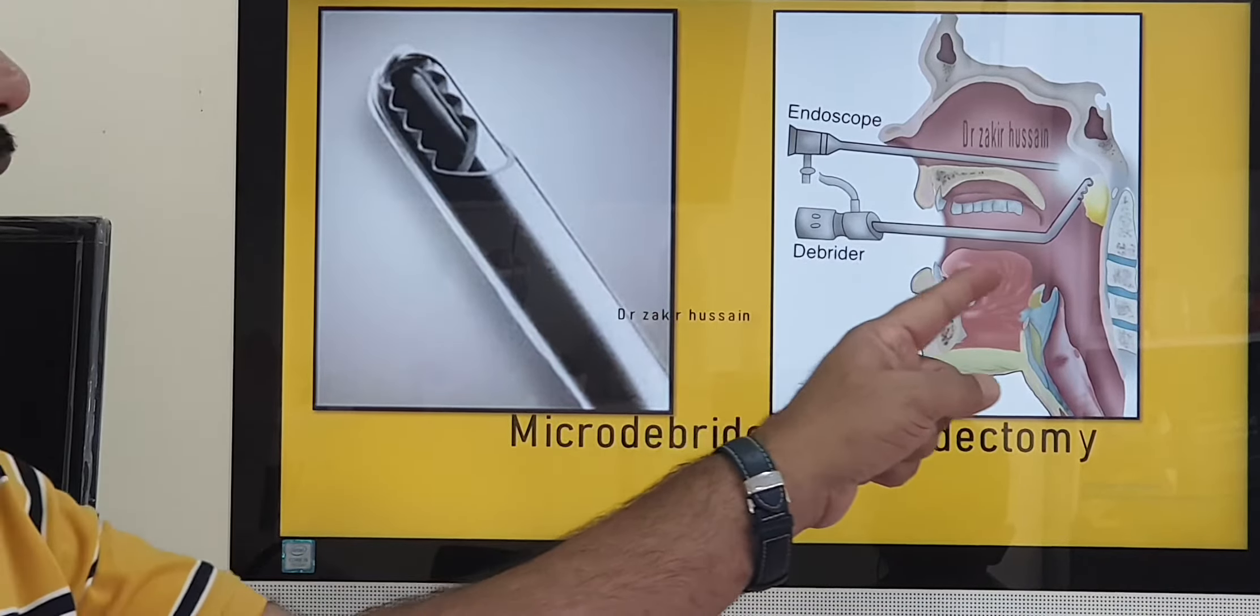Wherever this blade comes in contact, it eats up the tissue. By direct visualization and with the help of the debrider, we can completely remove the adenoids. This technique is called microdebrider adenoidectomy. This is the second technique.